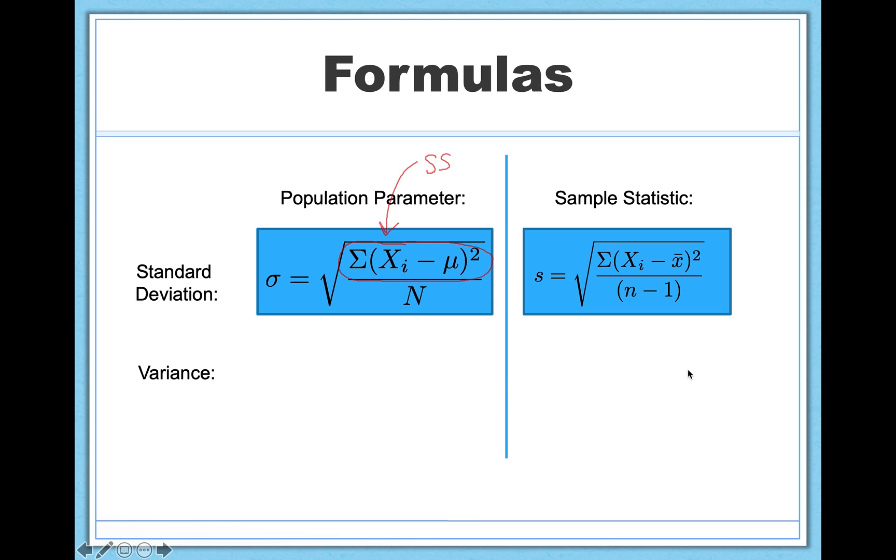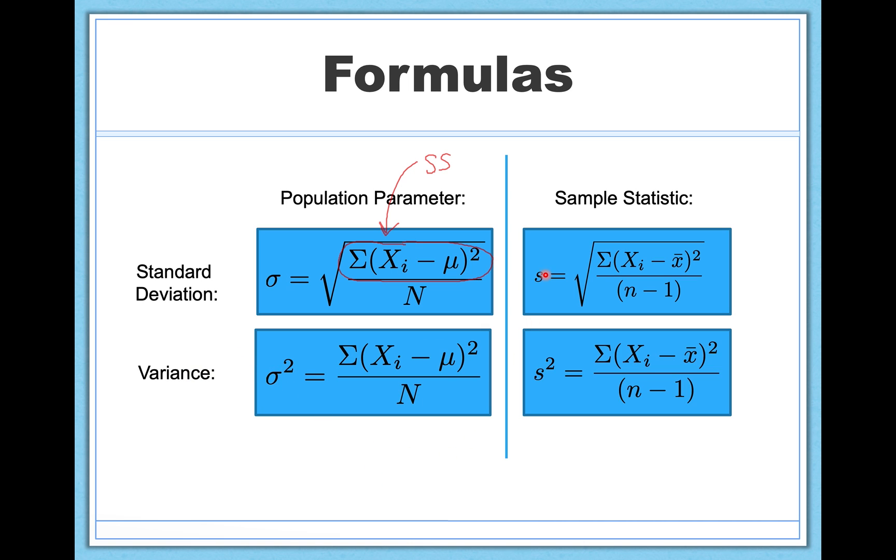So for our sample statistic, we have this. You're going to see an s on the left here, and it's going to have some similarities, but you're going to notice a difference or two that we'll talk about in the next video. For variance, we have sigma squared, and for sample statistic version of variance, we have s squared.